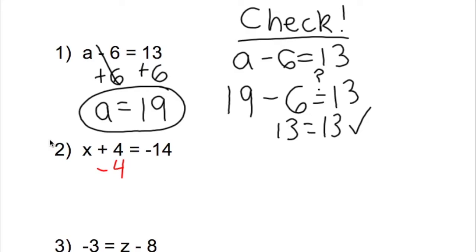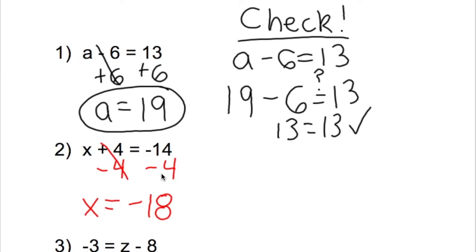Whatever you do on one side, you have to do on the other side of the equal sign. Positive 4 minus 4 is 0, so that cancels out. Then we have negative 14 minus 4, which is negative 18. So x is equal to negative 18.